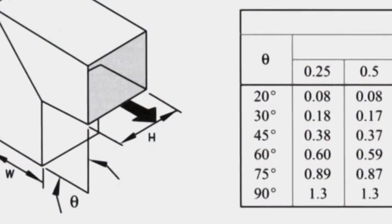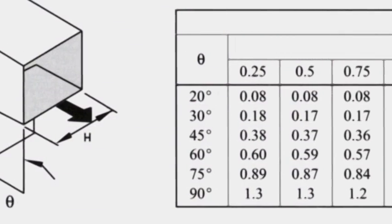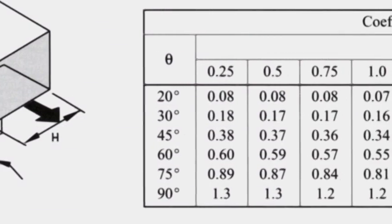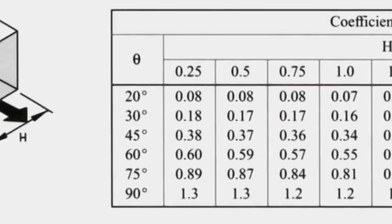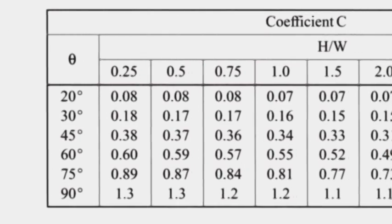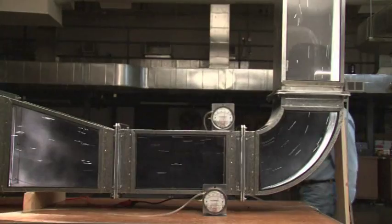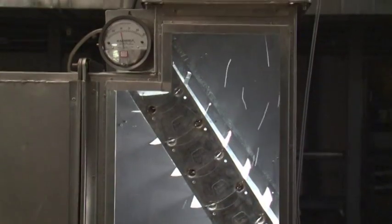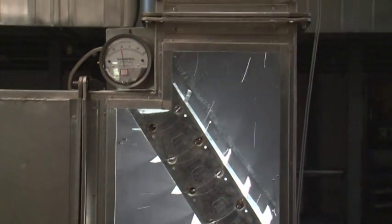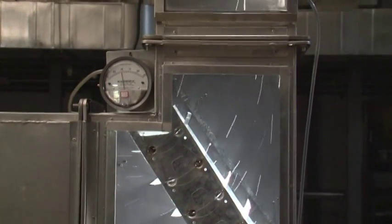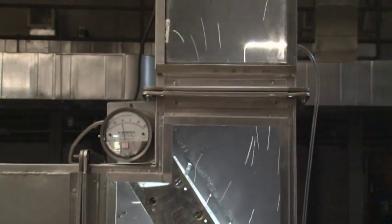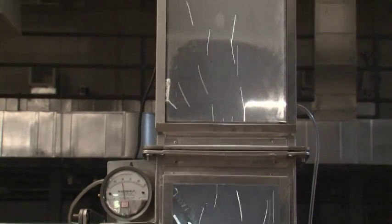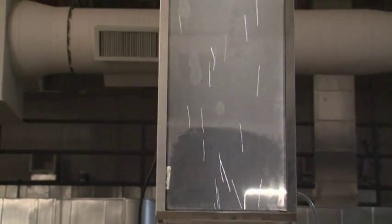This table shows the loss coefficient, which is a part of the pressure loss function formula. However, air velocity plays a major factor in duct pressure loss, and the slower the air velocity, the lower the potential energy savings are to offset the higher construction costs of these types of fittings.